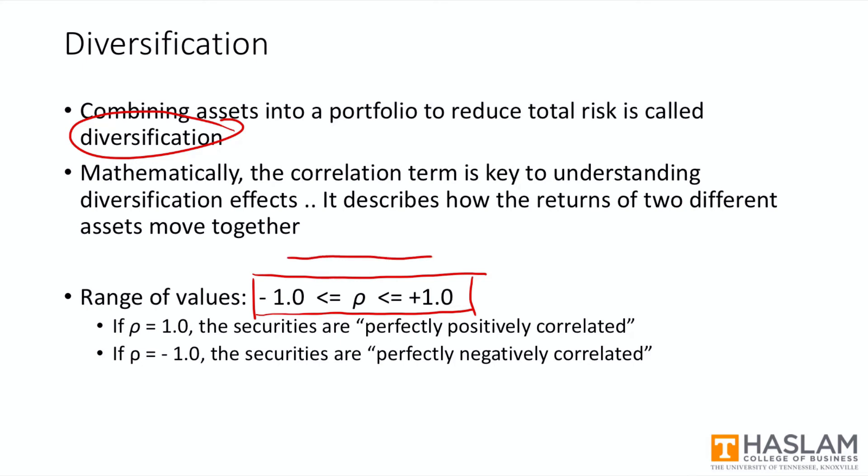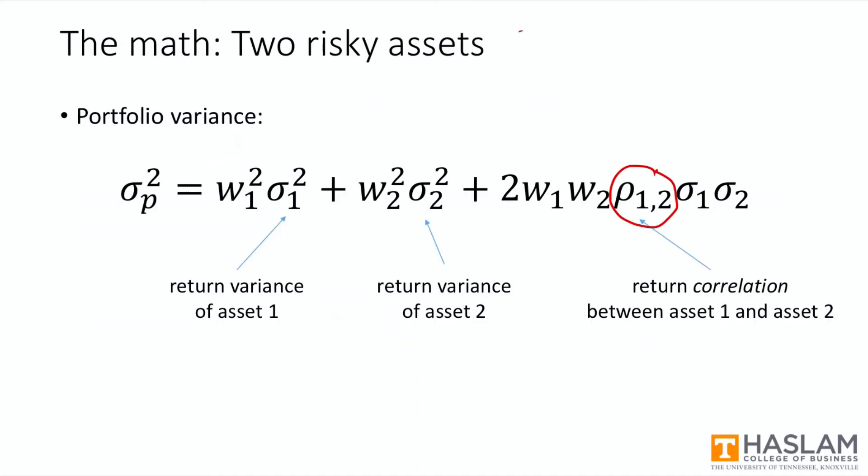If correlation is on the high end of this scale, however, there will be little diversification benefit. Again, look at the equation and insert a positive value here. If you have a positive rho, this whole last term is positive. And the greater the rho, the greater the portfolio variance or the greater the risk.